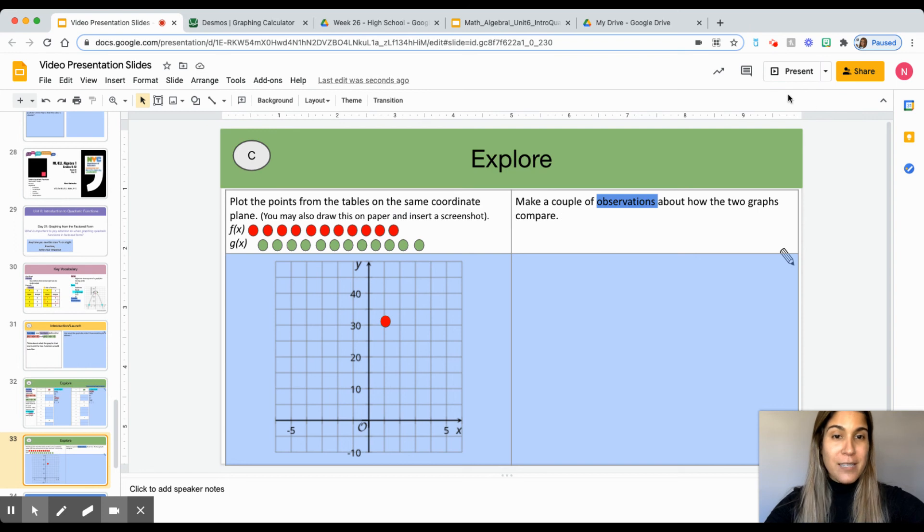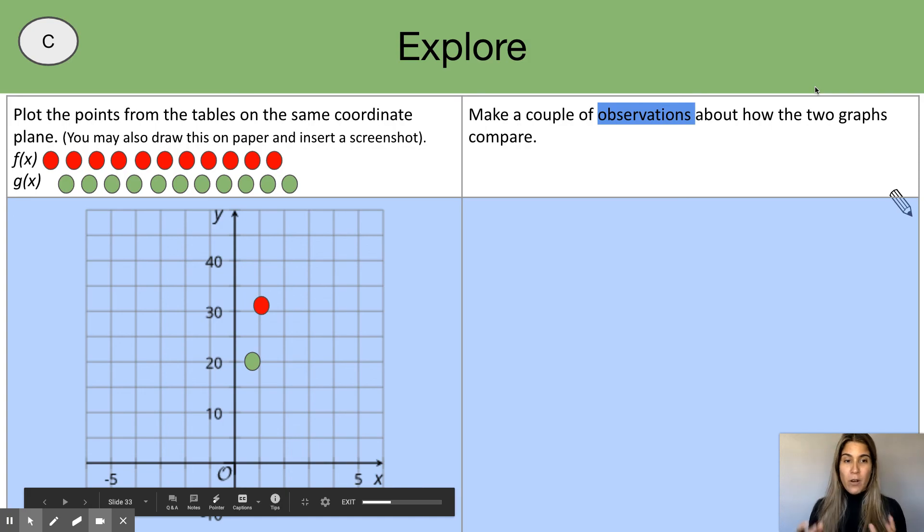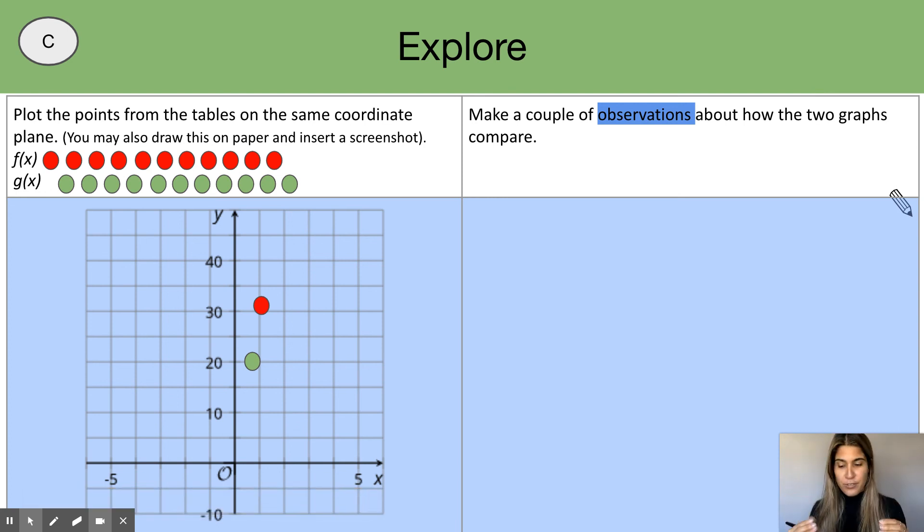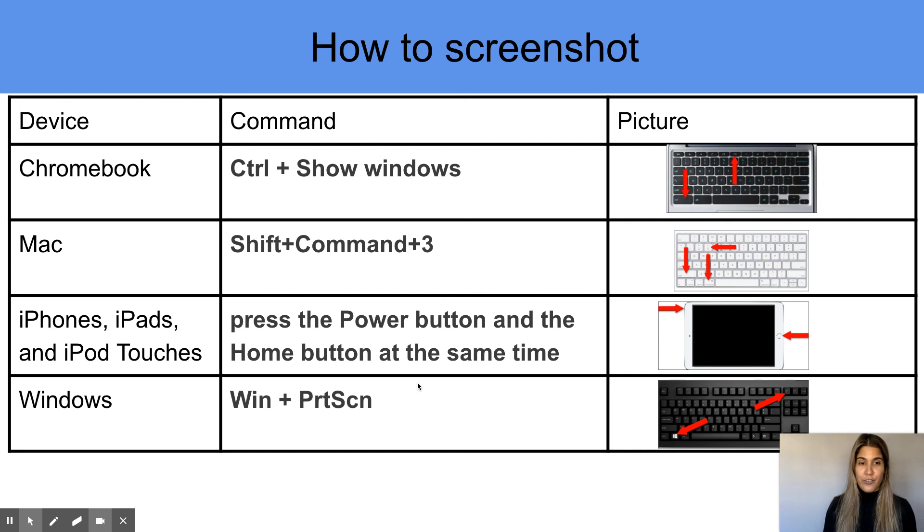In this portion, it says, make a couple of observations about the two graphs. So once you have everything plotted and in place, it wants you to observe. Remember, to observe means to look. You are looking and identifying key things in this graph. How is this going to help me through the lesson? This will help me to identify how does the function relate to the graph of that function. After you've identified key things and written down your observations, you should screenshot your graph.